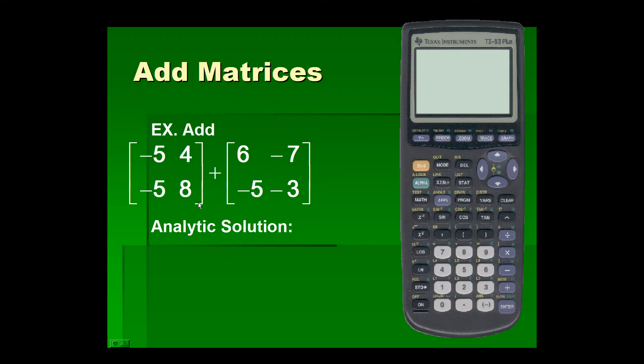Let's take a look at the analytic solution. In order to add matrices, we shall add corresponding elements. So first we'll add the element in the first row, first column of our matrices. Negative five plus six is positive one, so we'll place that as the element of the first row, first column.